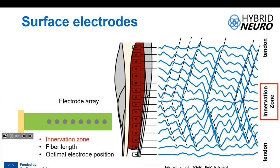To identify the innervation zone: if we place an array of electrodes on the muscle and record in bipolar configuration, making differences between adjacent electrodes, we get signals whose polarity changes along the array. The signal is negative then positive above the innervation zone, and inverted — positive then negative — below it. Where the signal changes polarity corresponds to where the nerve innervates the muscle — the neuromuscular junction — which is what we refer to as the innervation zone.